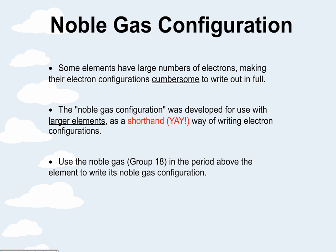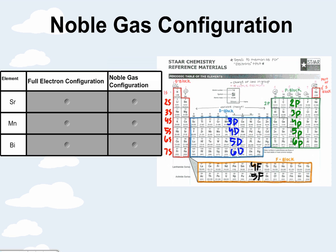Noble gas configuration. This is the shorthand way of writing out that Aufbau order. The Aufbau order can be very cumbersome, so we came up with a cheat for it. It's called the noble gas configuration. Let's look at some examples.